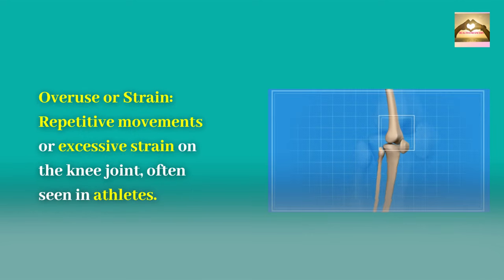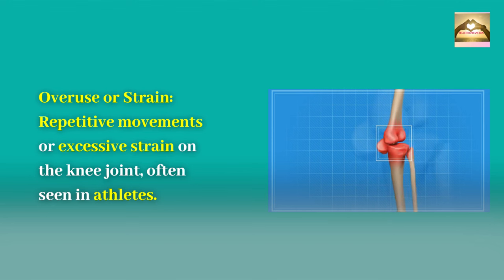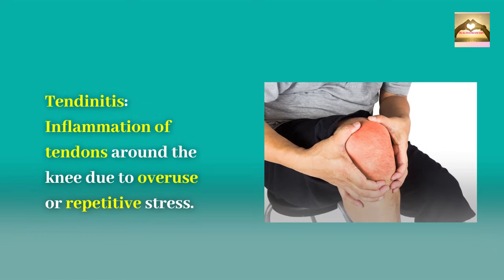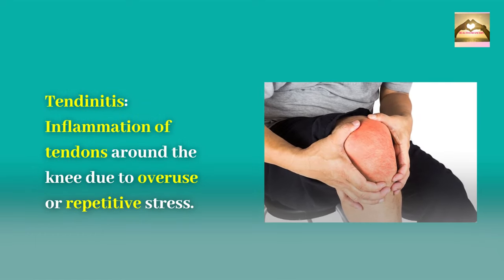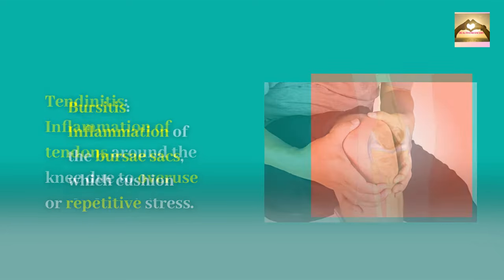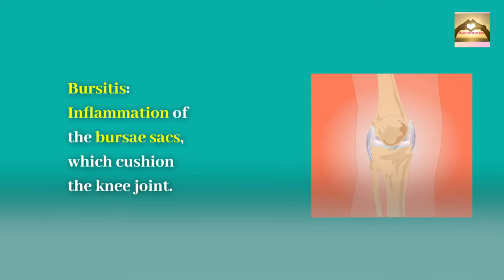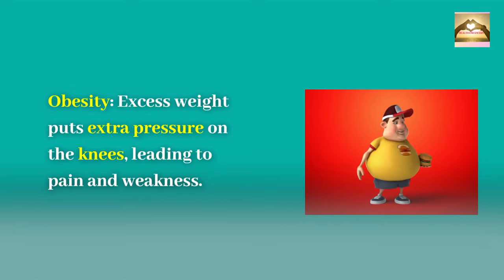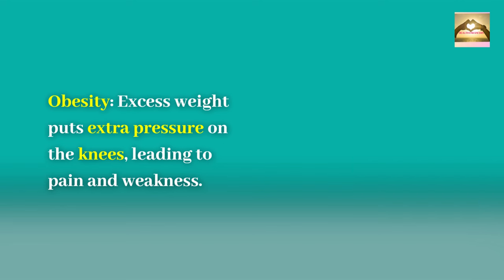Overuse or strain involves repetitive movements or excessive strain on the knee joint, often seen in athletes. Tendinitis is inflammation of tendons around the knee due to overuse or repetitive stress. Bursitis is inflammation of the bursae sacs, which cushion the knee joint. Obesity — excess weight puts extra pressure on the knees, leading to pain and weakness.